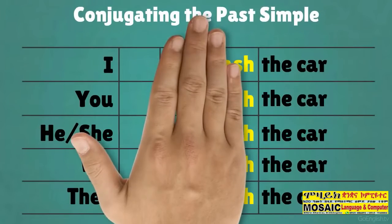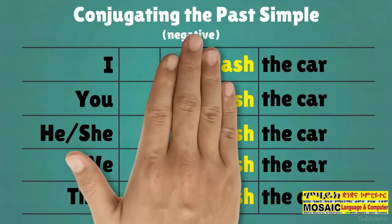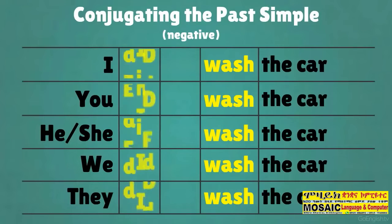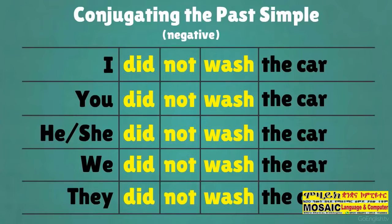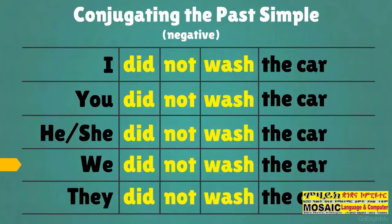Conjugating the past simple negative: I did not wash the car, you did not wash the car, he did not wash the car, she did not wash the car, we did not wash the car.